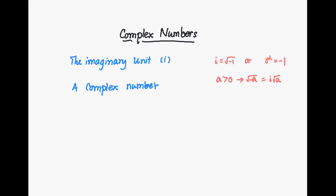A complex number is defined in the notation form as a plus bi, where a is called the real part and b is called the imaginary part. If a is zero, then a plus bi reduces to just the bi term, and is called a pure imaginary number.